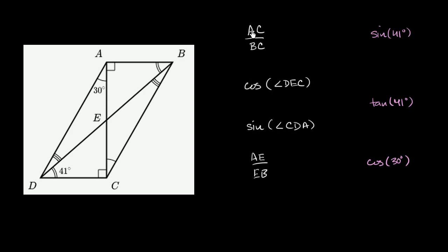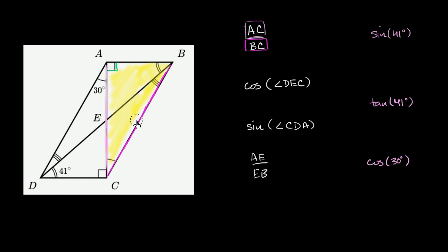Let's first look at the length of segment AC over the length of segment BC. AC is this length right over here in purple, over BC, this length right over here. So it's the ratio of the lengths of two sides of a right triangle — triangle ABC — and it's reasonable that the ratio of two sides of a right triangle will equal the sine of one of its angles.